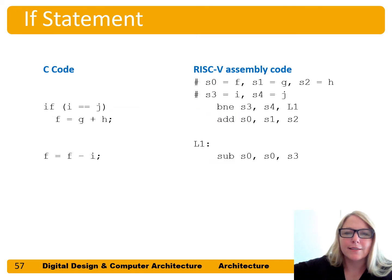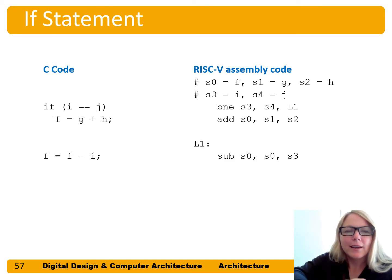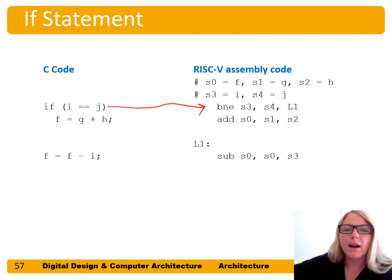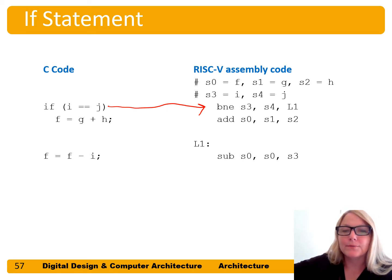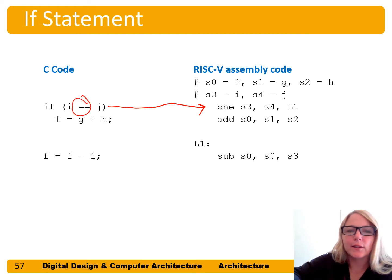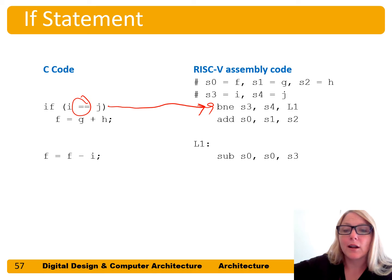This is a bit unexpected: the assembly code does the opposite of what the high-level code does. The high-level code checks equality, and in the assembly code we're checking inequality — not equal.